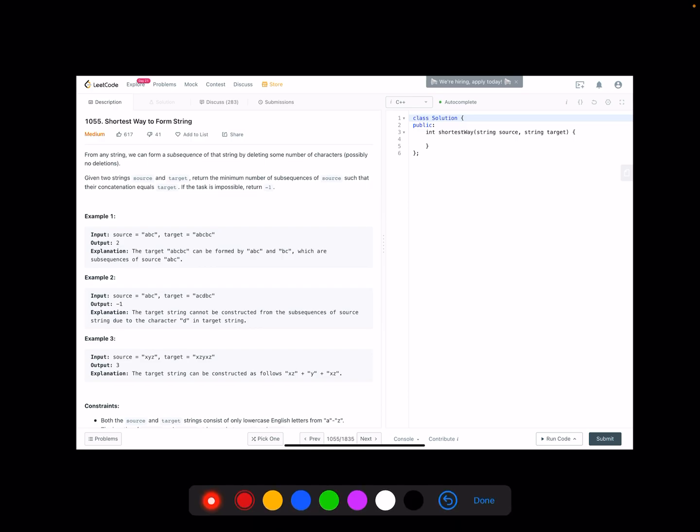We are given a source string and target string. We need to use a substring of several copies of source to formulate target. Let's take a look at the first example. The source is ABC and target is ABCBC. Eventually we need two copies because we can use ABC for the first copy and we use BC of the second copy to formulate target.